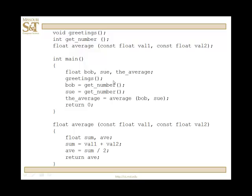Let's look at an extensive program. We have three functions: greetings, getNumber, and a new one called average. Average returns a float and takes two parameters. In this example, I'm going to introduce a new concept — the const parameter. This is your second use of the qualifier const.